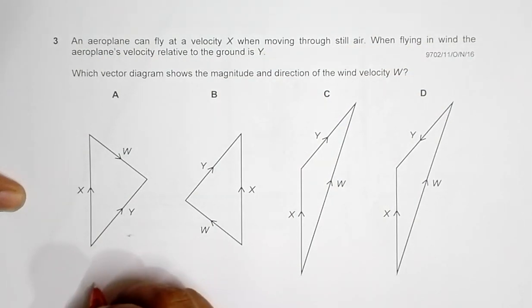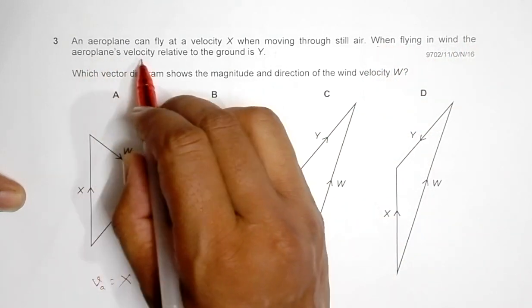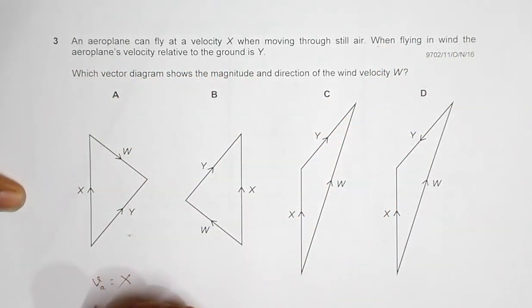When flying in wind, the aeroplane's velocity relative to the ground is y. So this is the resultant velocity because of the effect of the aeroplane velocity and the wind velocity.